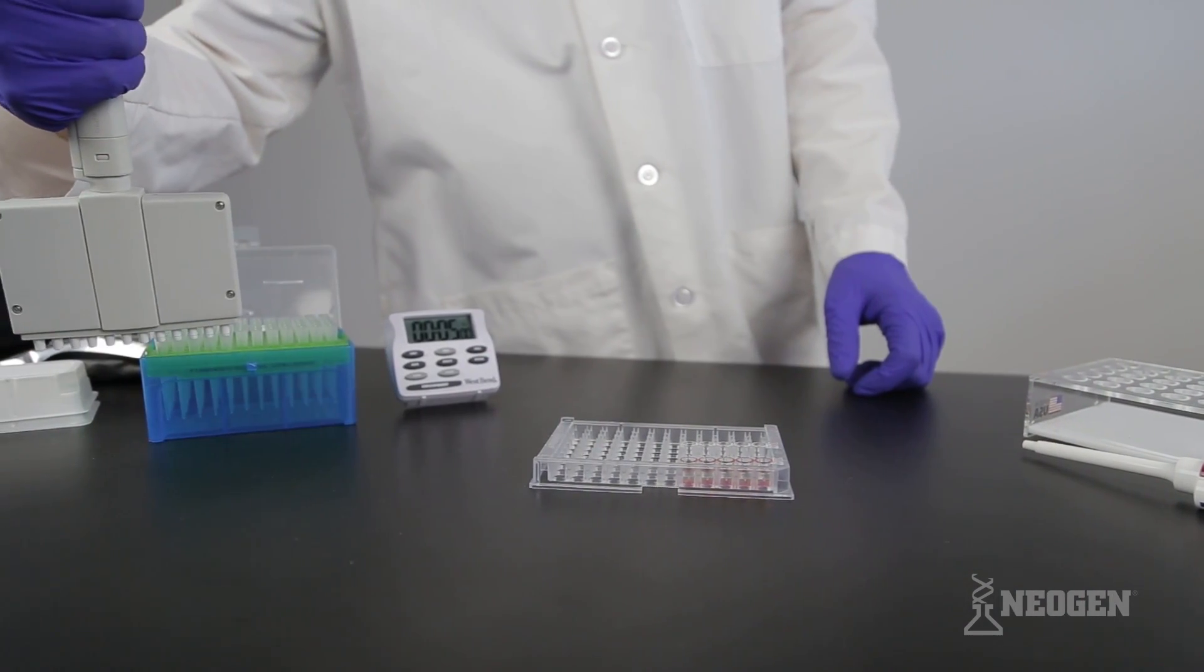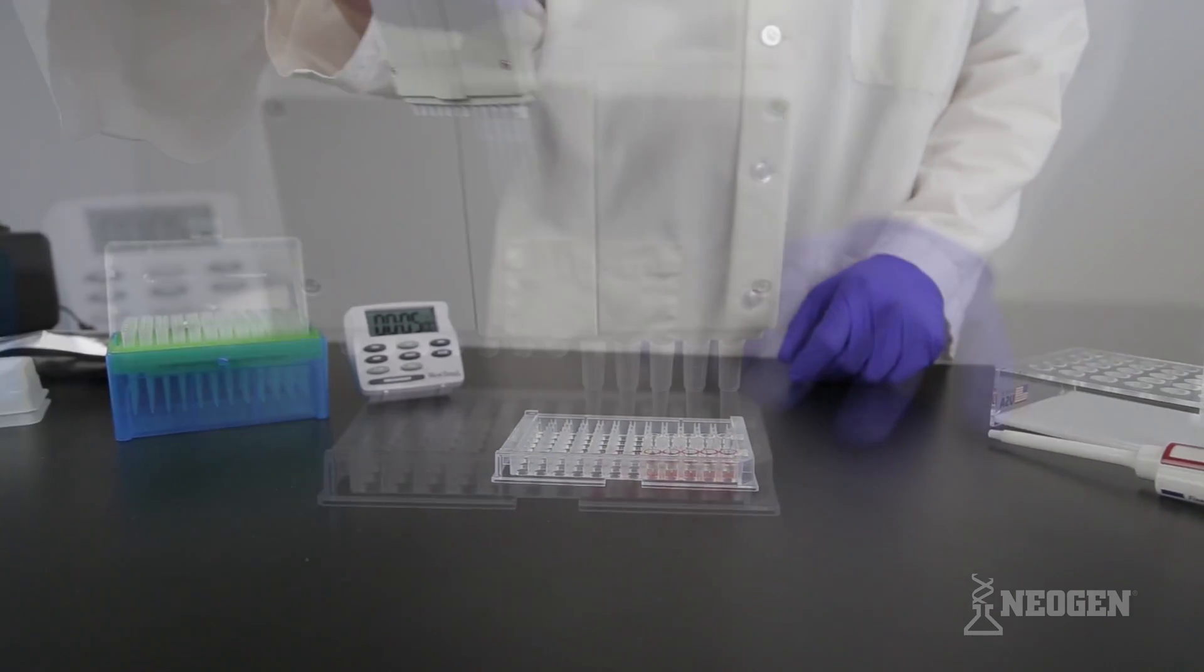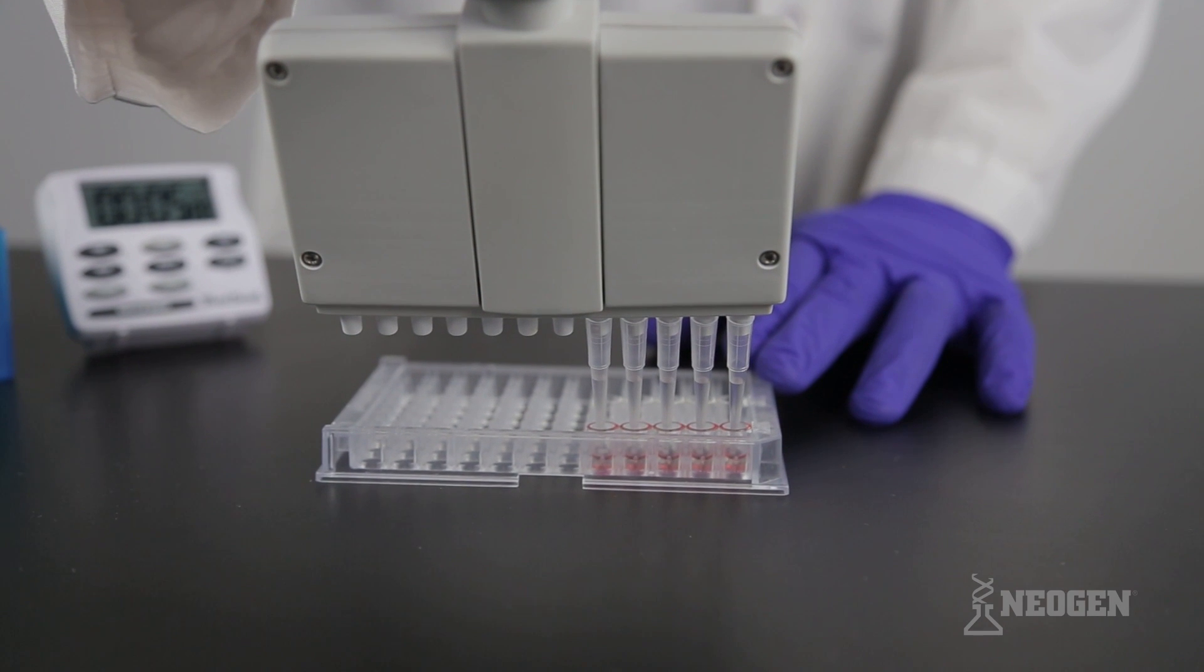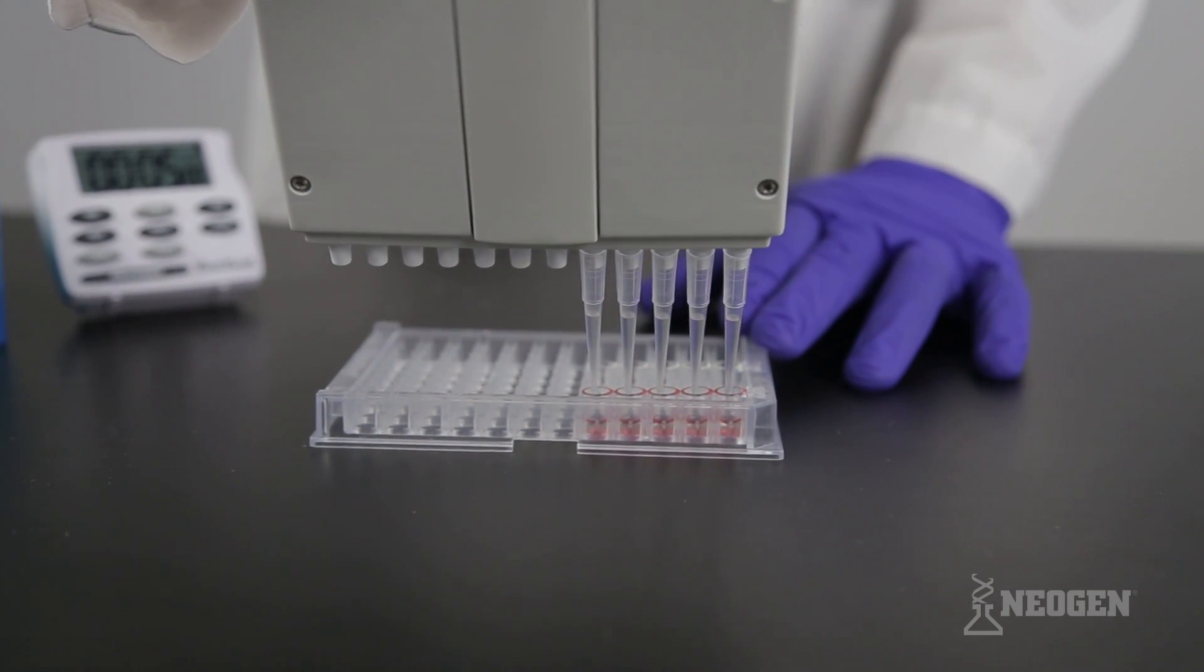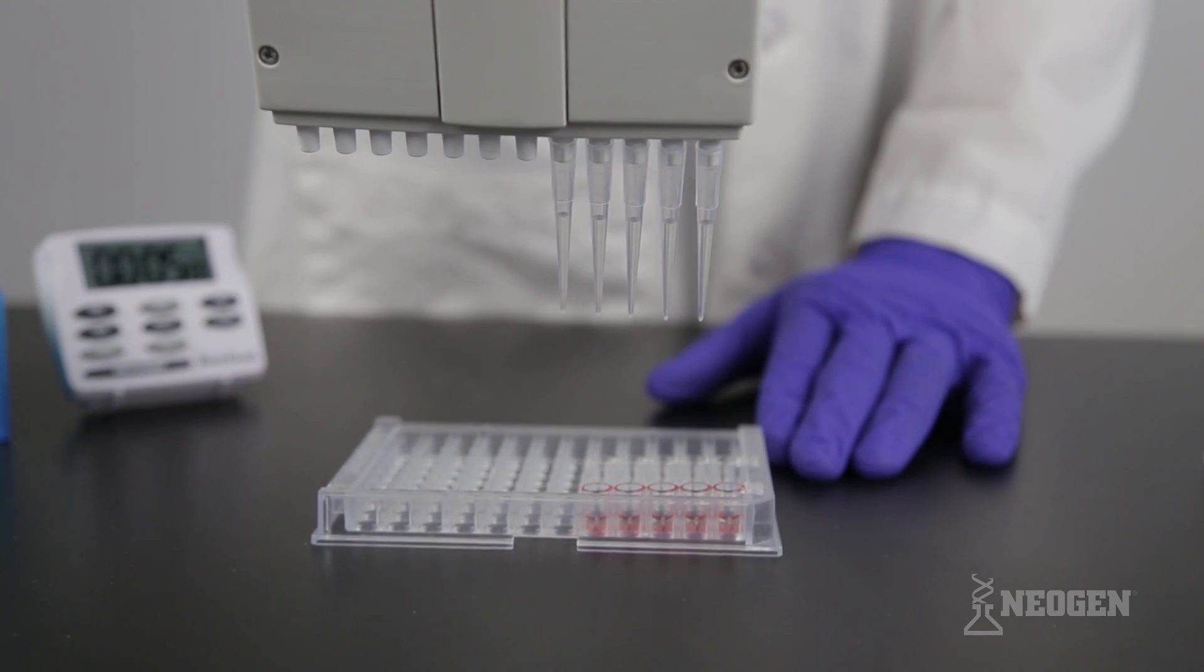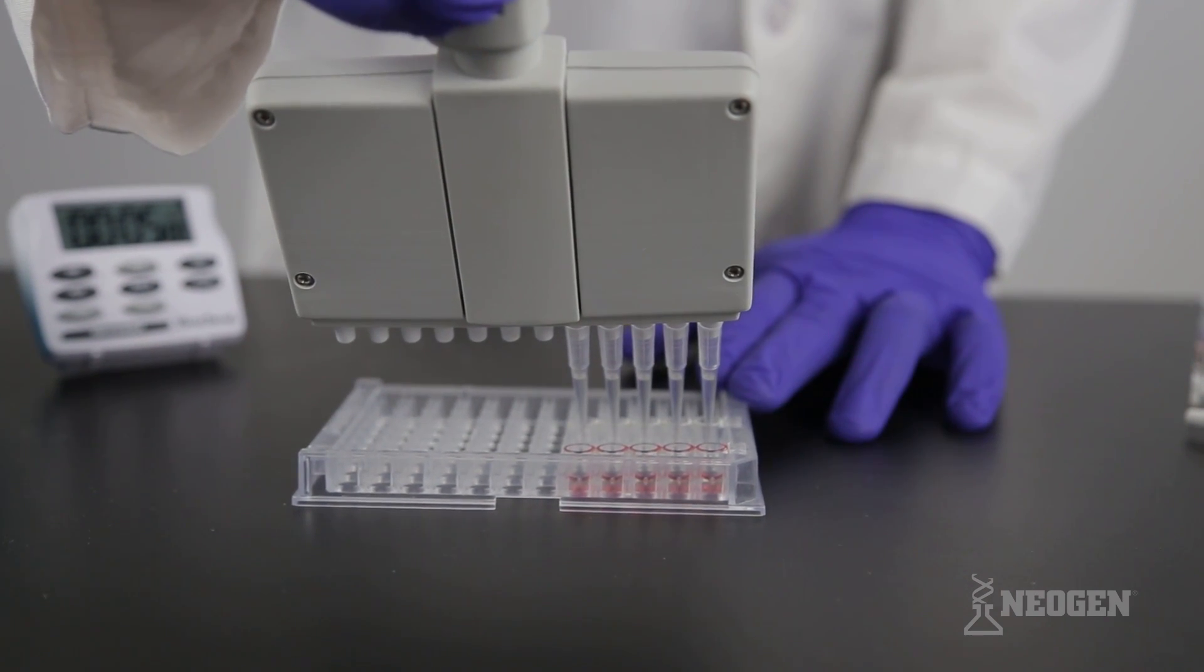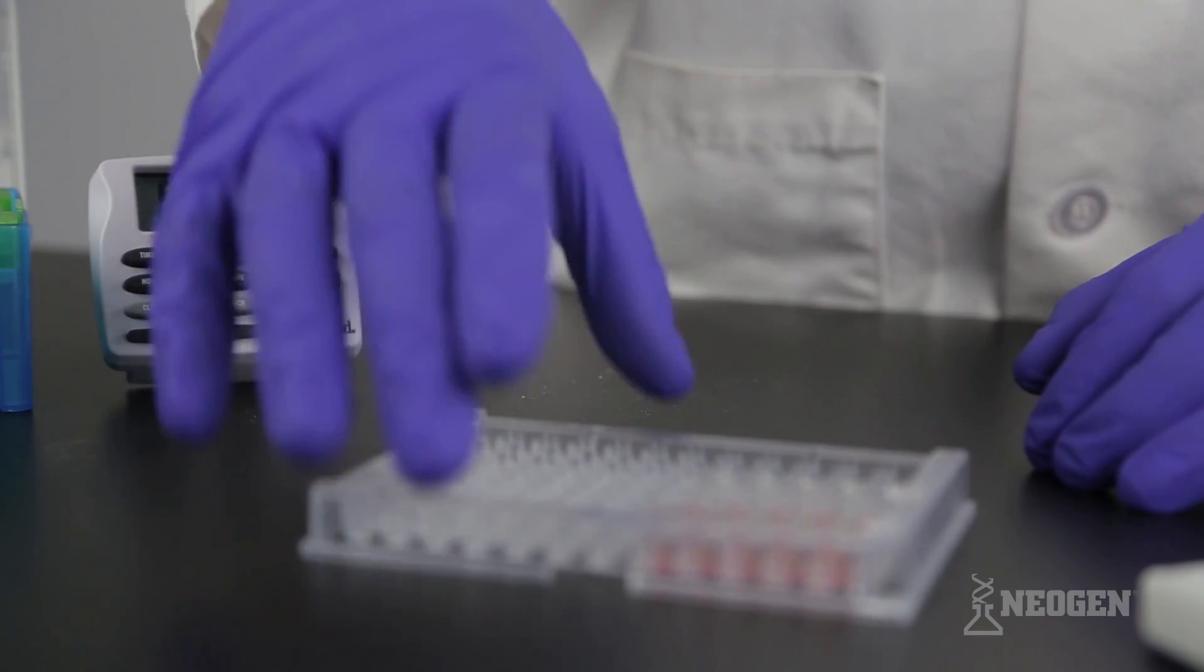Using a 12 channel pipetter adjusted to 100 microliters, place the appropriate number of pipette tips onto the pipette. Mix conjugate and samples in the red marked wells by pipetting up and down five times. Draw up 100 microliters, making sure no bubbles are present in any of the tips. Transfer 100 microliters of sample into the clear antibody wells.